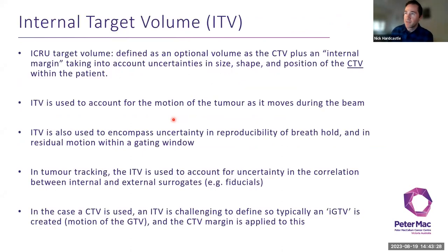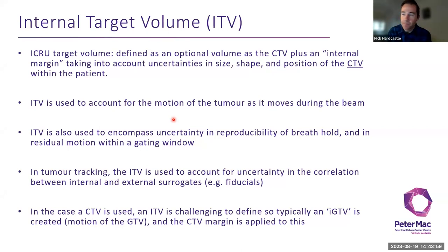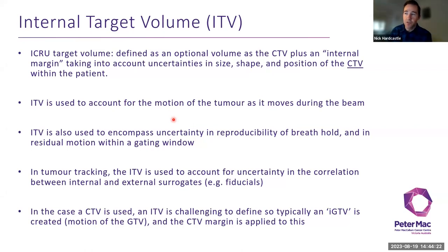For passive motion management, I'll cover internal target volume in the most detail because it's the most commonly used way of accounting for respiratory motion. The ITV is an ICRU target volume defined as the CTV plus an internal margin accounting for uncertainties in size, shape, and position of the CTV within the patient. It's typically used to account for tumor motion while the beam is on, and can also encompass uncertainty with reproducibility of breath hold or residual motion within a gating window.